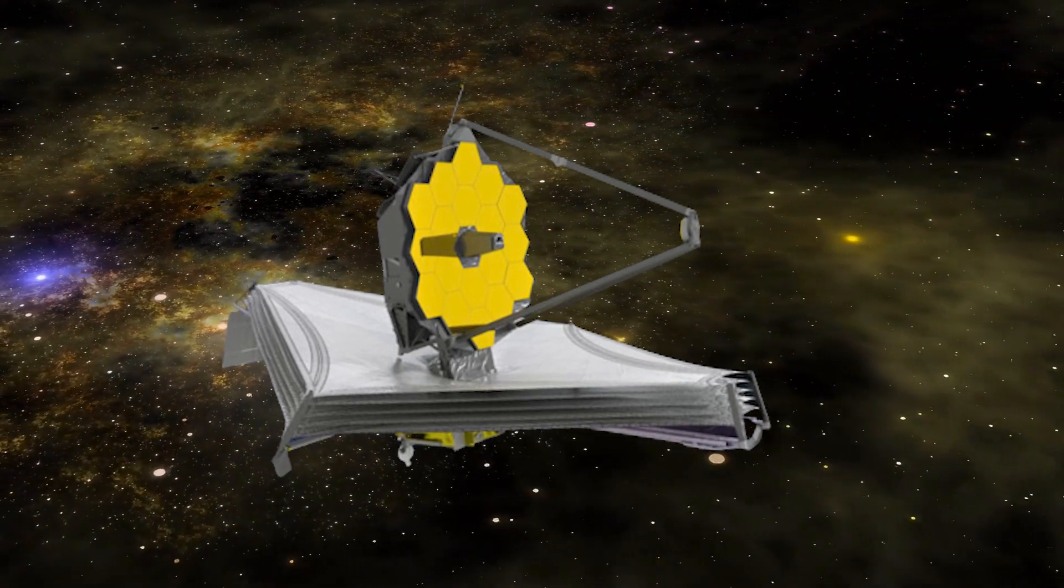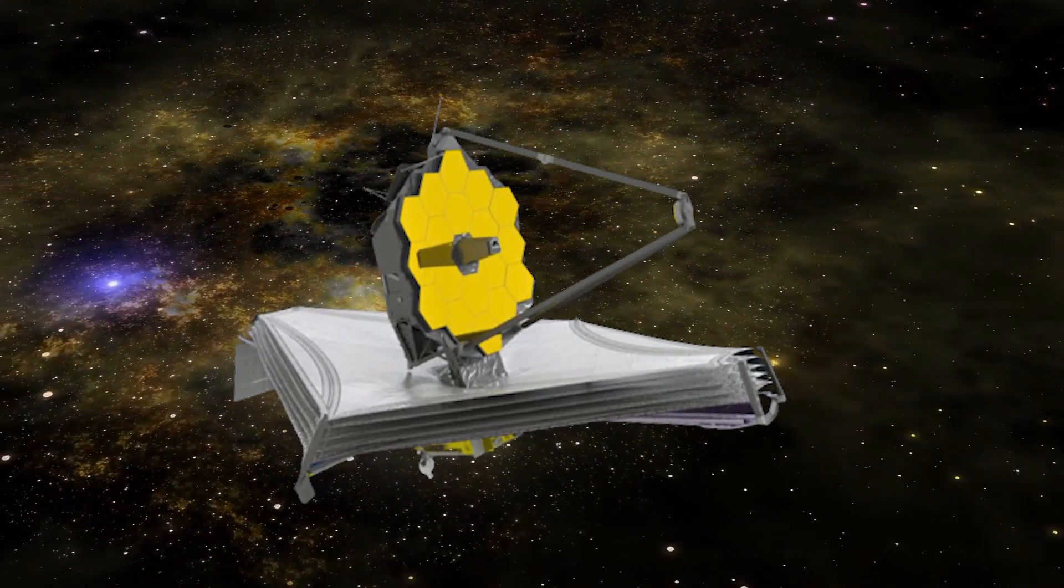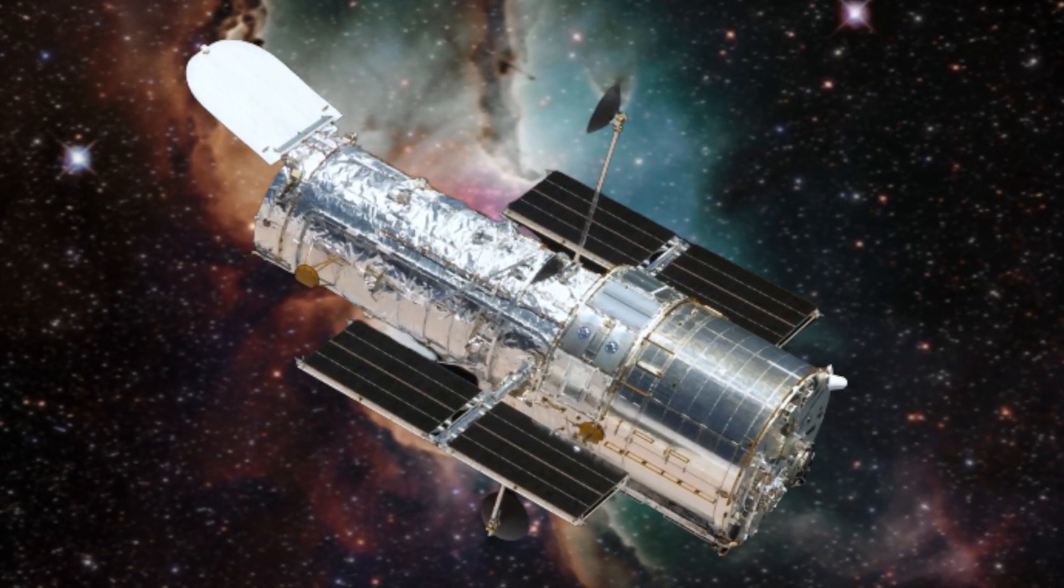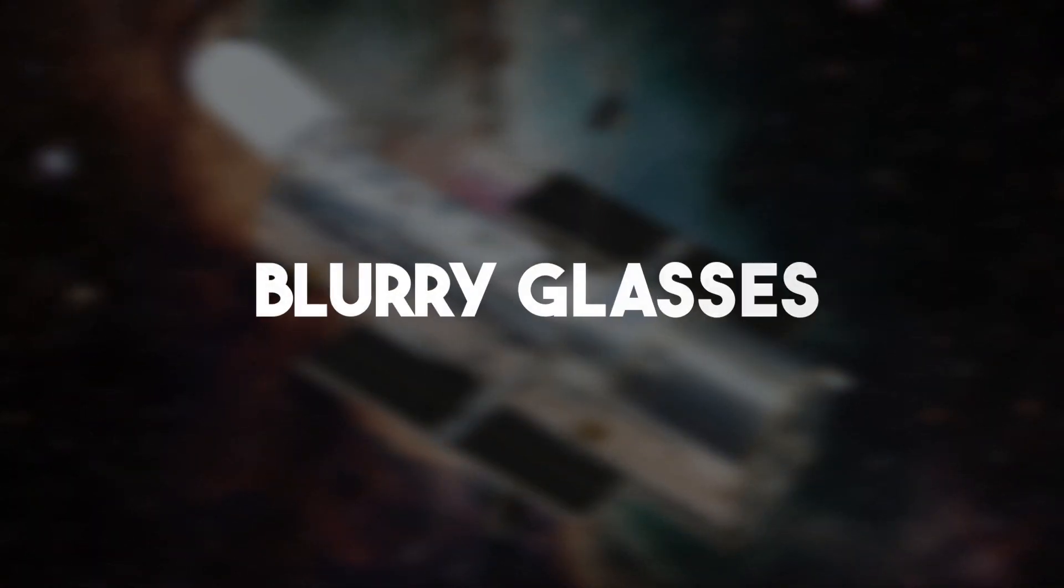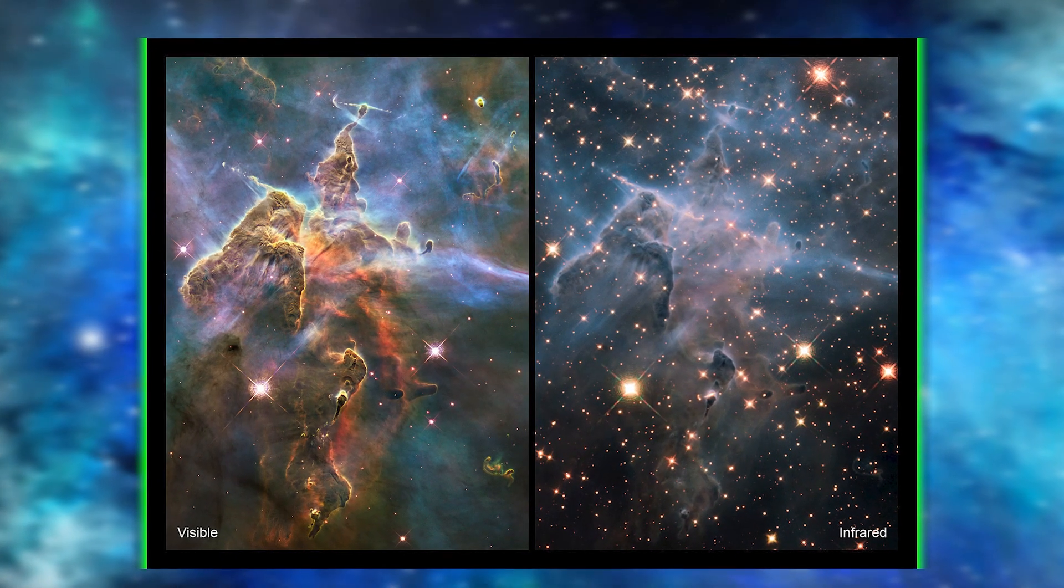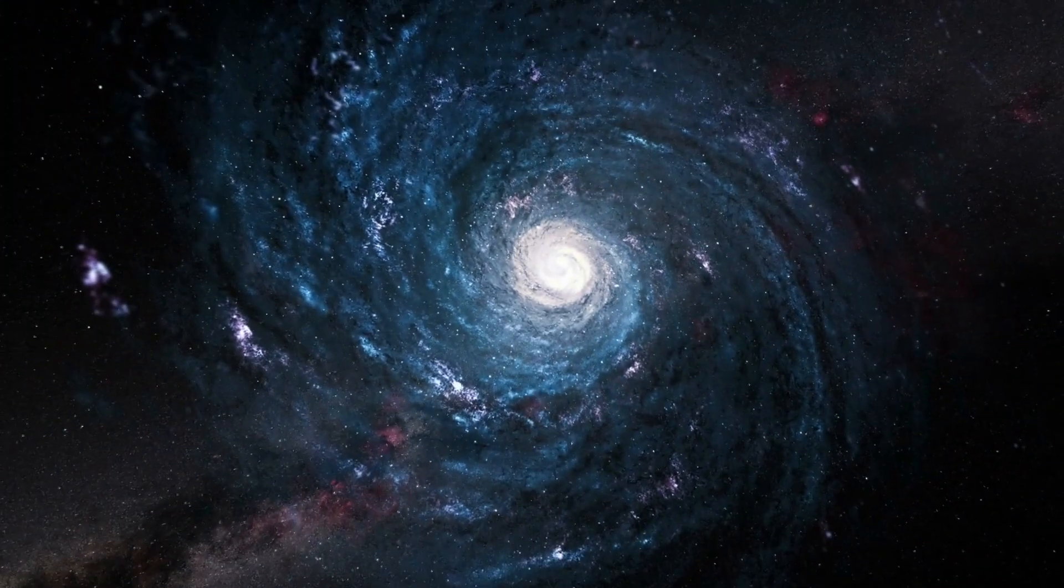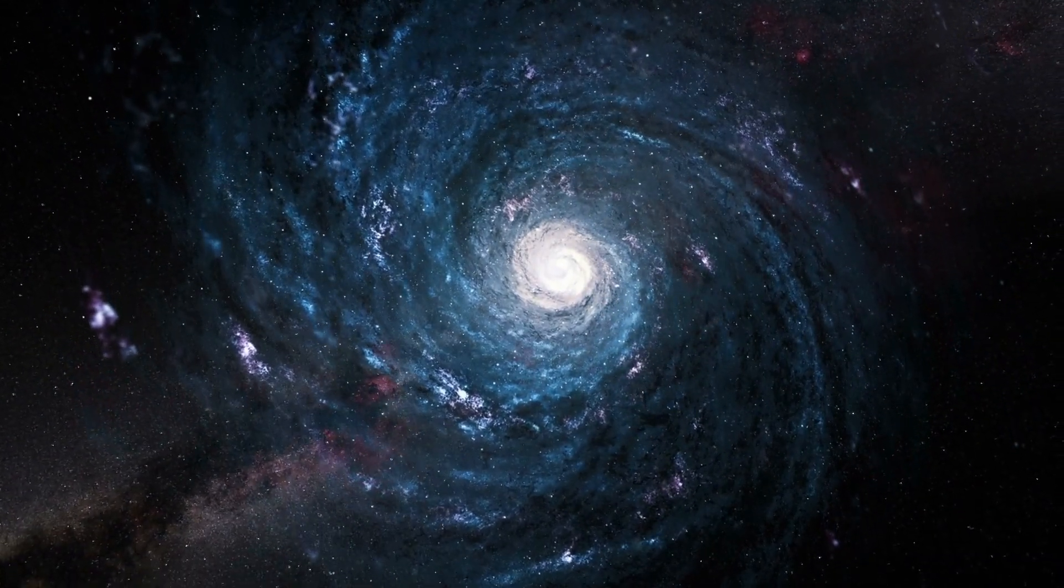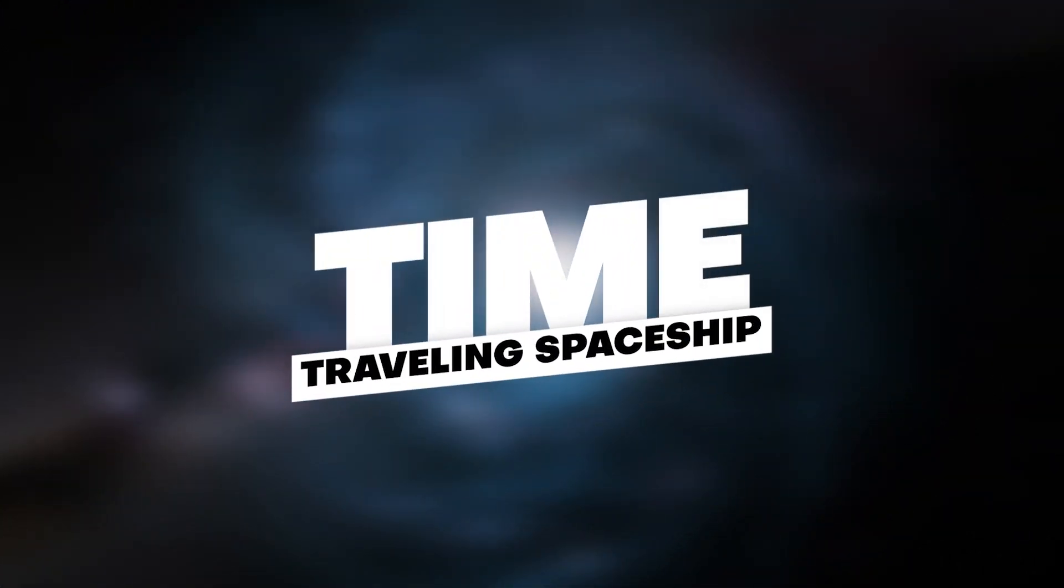Before the James Webb Telescope, our understanding of the early universe was like a puzzle missing some critical pieces. The Hubble gave us a taste of what was out there, but it's like we were seeing the universe with blurry glasses. Now, with its infrared vision, we're able to witness the universe in unprecedented detail. We're talking about galaxies that existed when the universe was just a cosmic teenager.